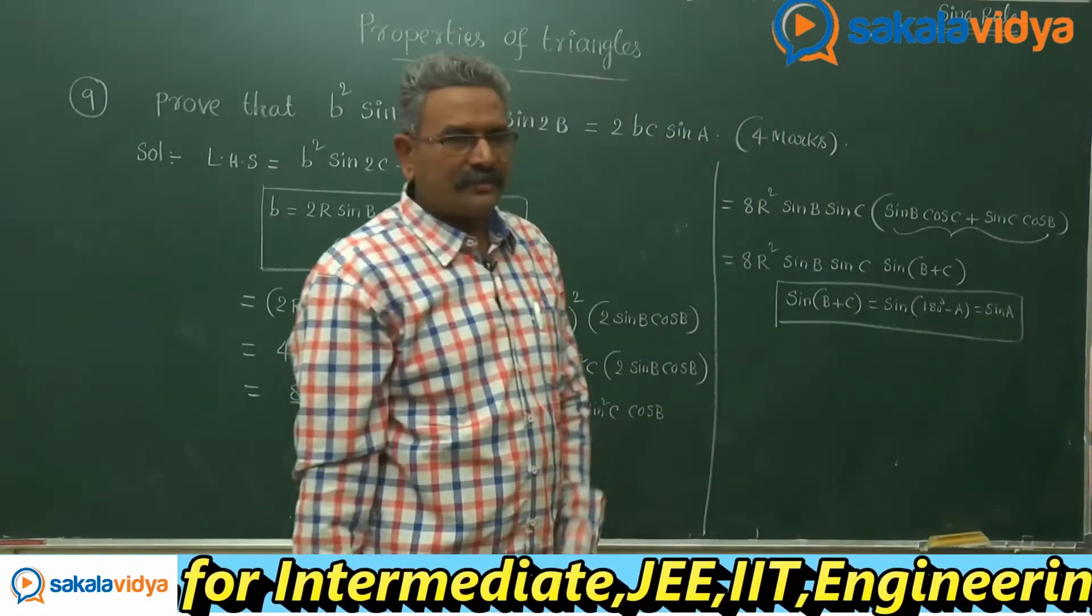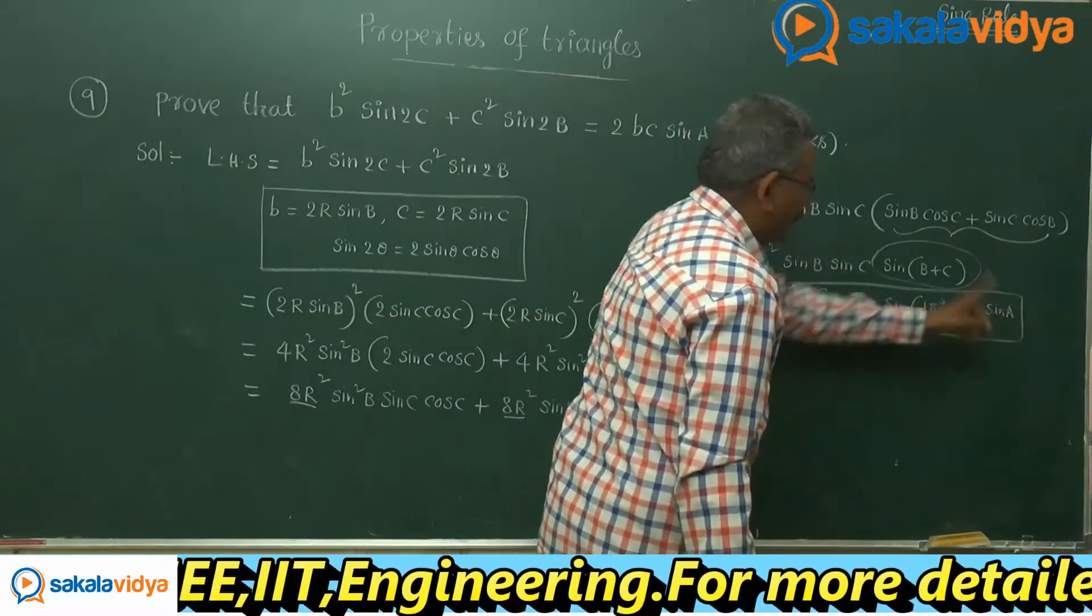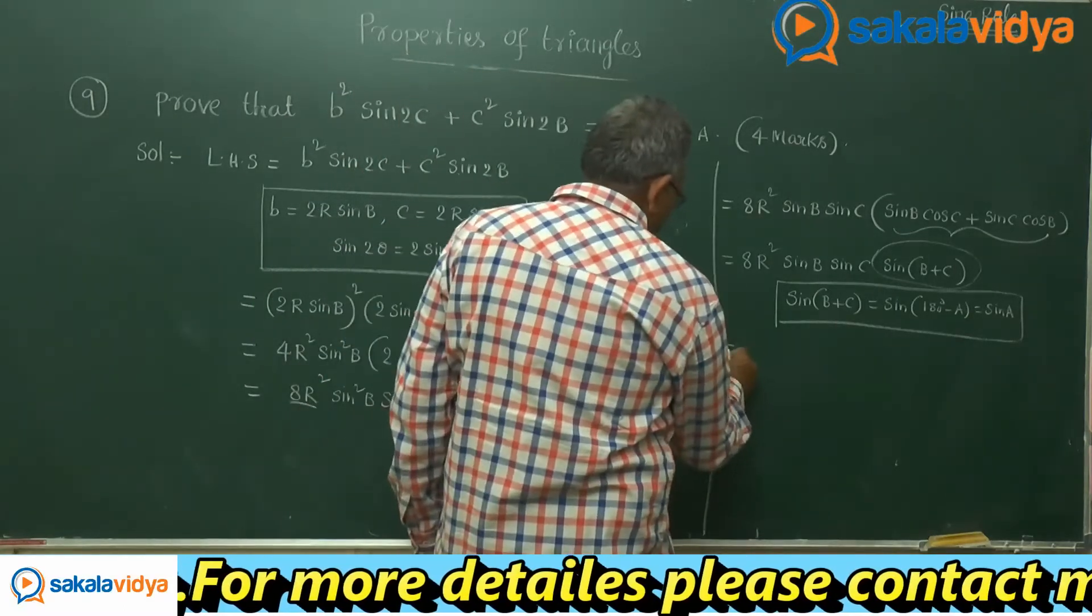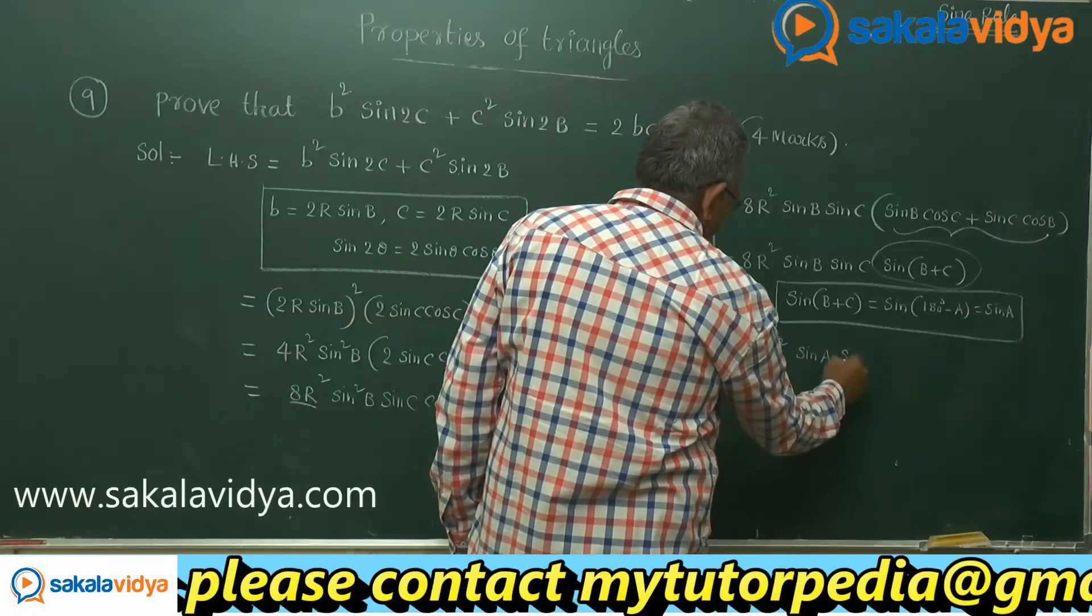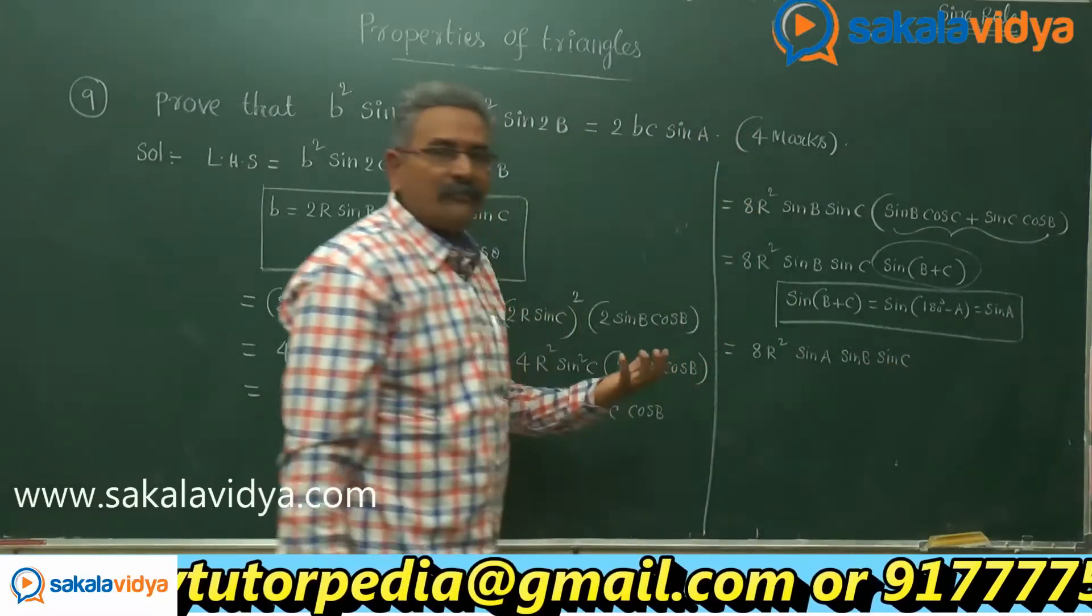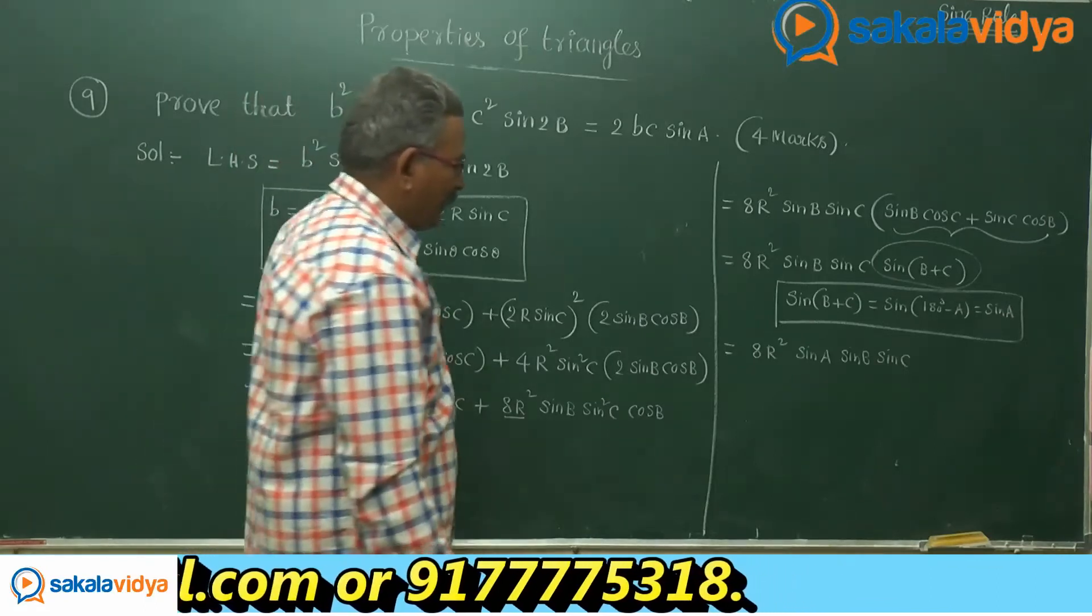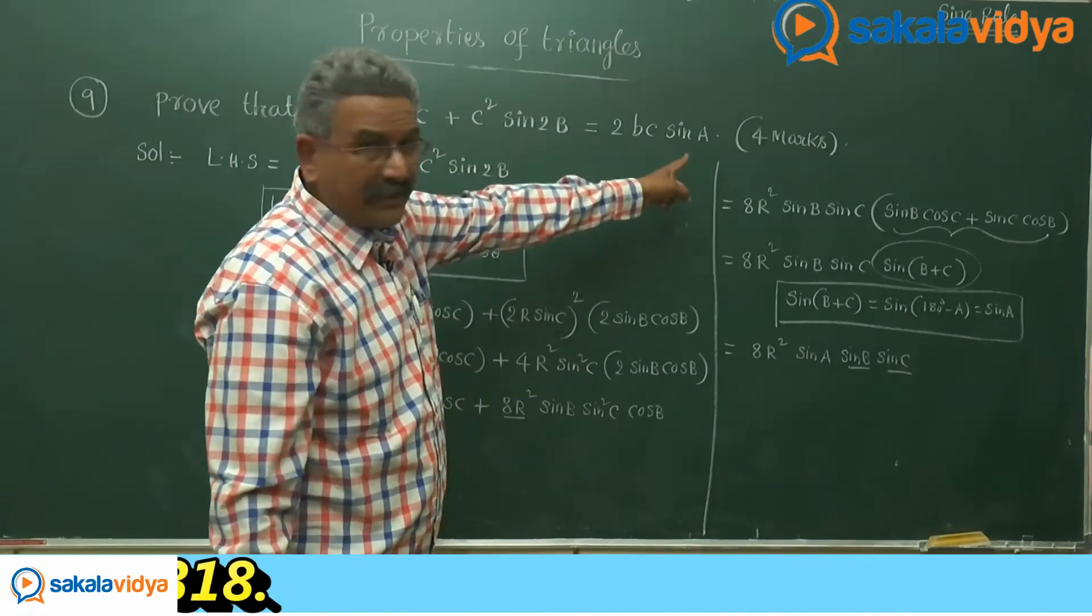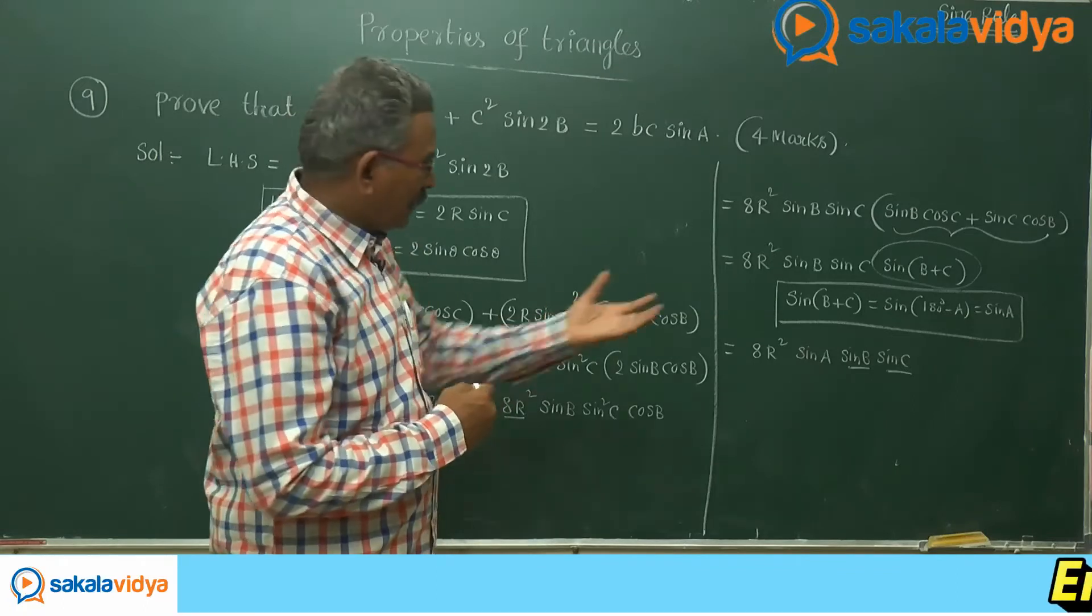That means this is replaced by sin a. Now what do you get? 8r squared here, we get sin a sin b into sin c. But what is our aim? What has to be proved? 2bc sin a. 2bc sin a means we have to change the sin b and sin c because we need sin a. That means we have to rearrange the terms in this product.